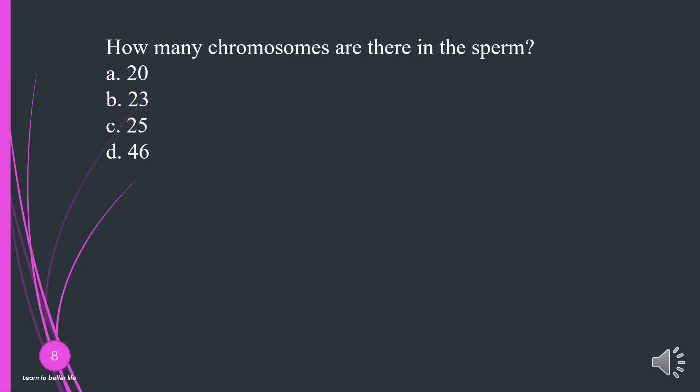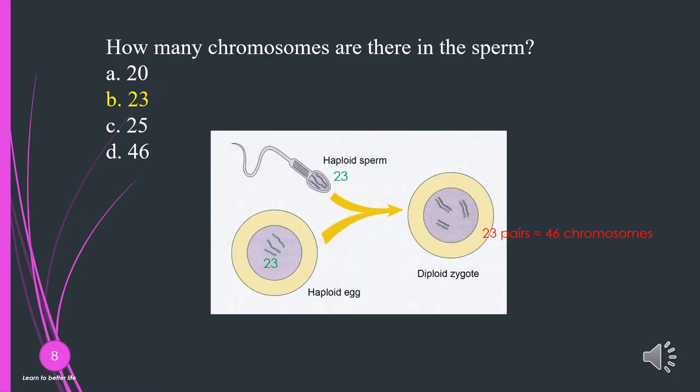How many chromosomes are there in the sperm? A. 20. B. 23. C. 25. D. 46. The answer is B, 23.